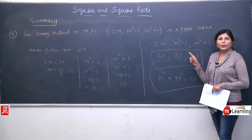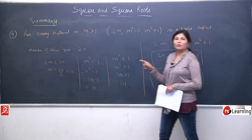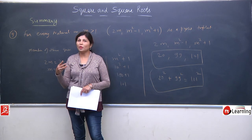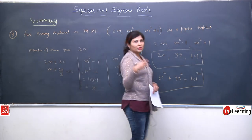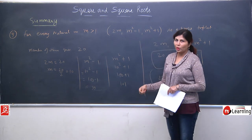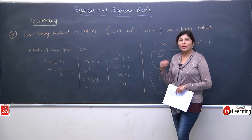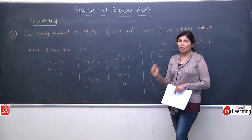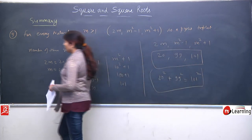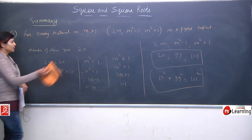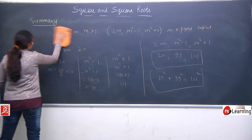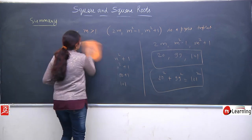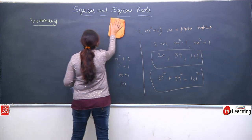Apart from properties, we have learnt 3 main identities: (a+b)² = a² + 2ab + b², (a-b)² = a² - 2ab + b², and a² - b² = (a+b)(a-b). That was the summary of all properties. We also learnt the column method shortcut. We'll do one more column method question for recall before moving to square roots.